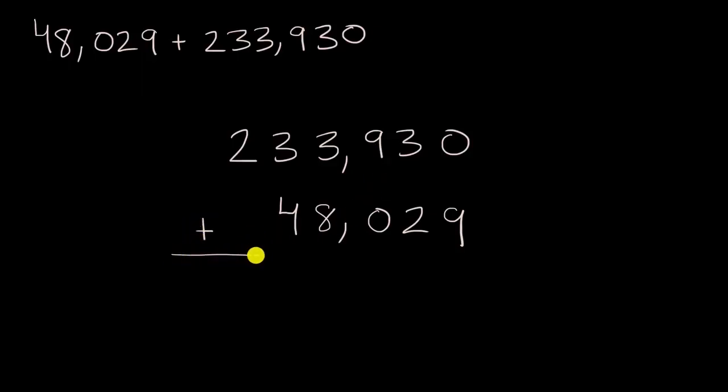Now I am ready to add. Let's start in the ones place. When adding numbers, it's always a good idea to start in the ones place. Zero ones plus nine ones is nine ones. Then I can go to the tens place. Three tens plus two tens is five tens.